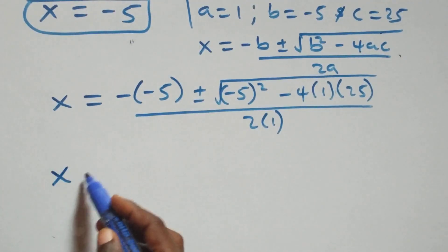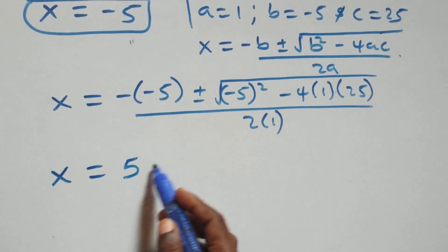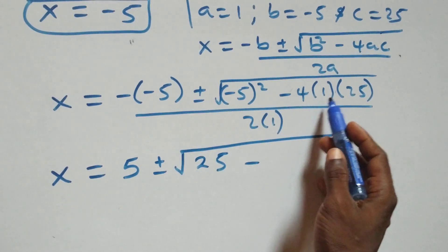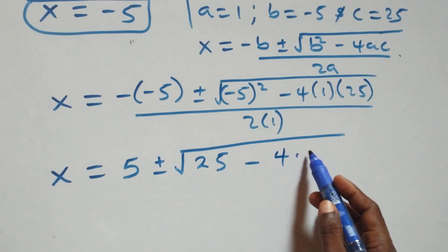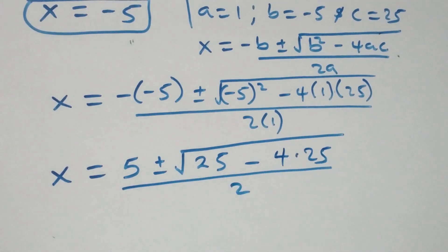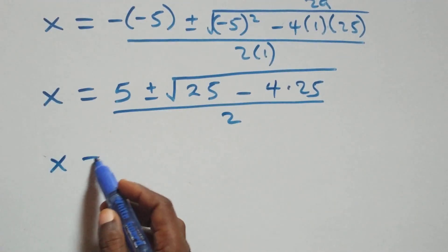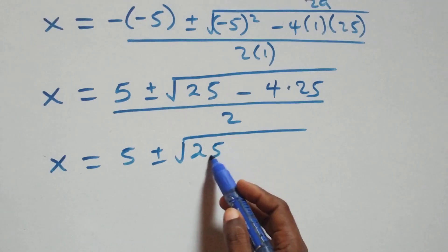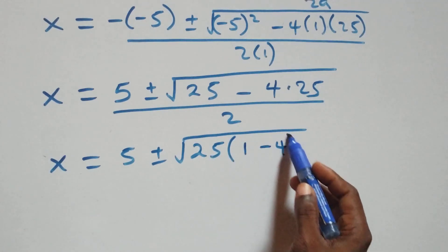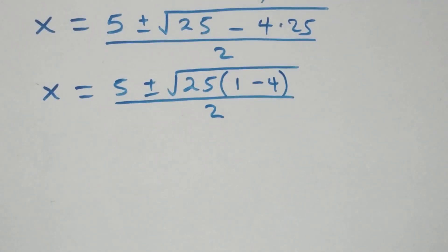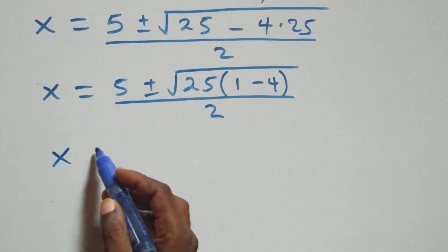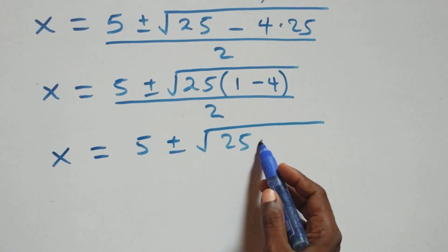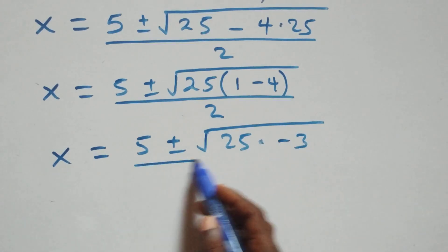We have x equals 5 plus or minus square root of 25 minus 4 times 25, all over 2. We factor out 25 inside the square root: x equals 5 plus or minus square root of 25 times 1 minus 4, all over 2. That gives x equals 5 plus or minus square root of 25 times negative 3, all over 2.